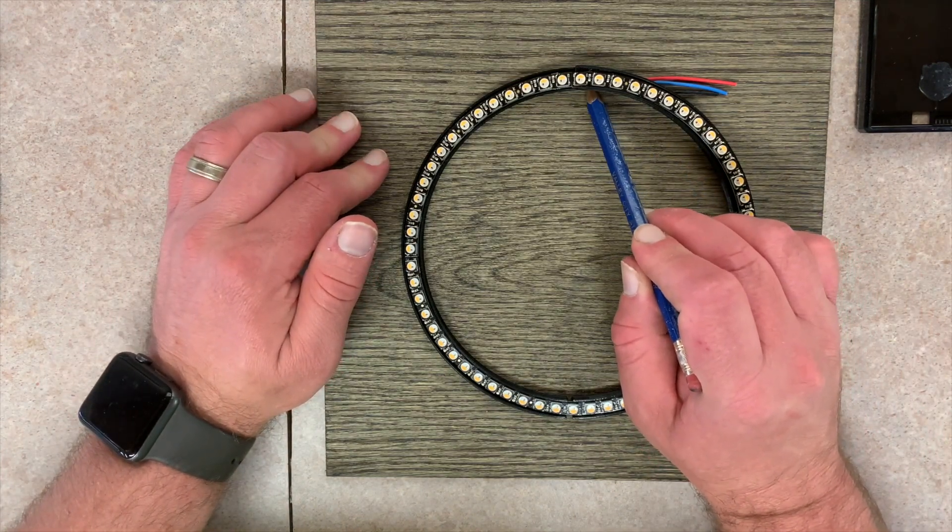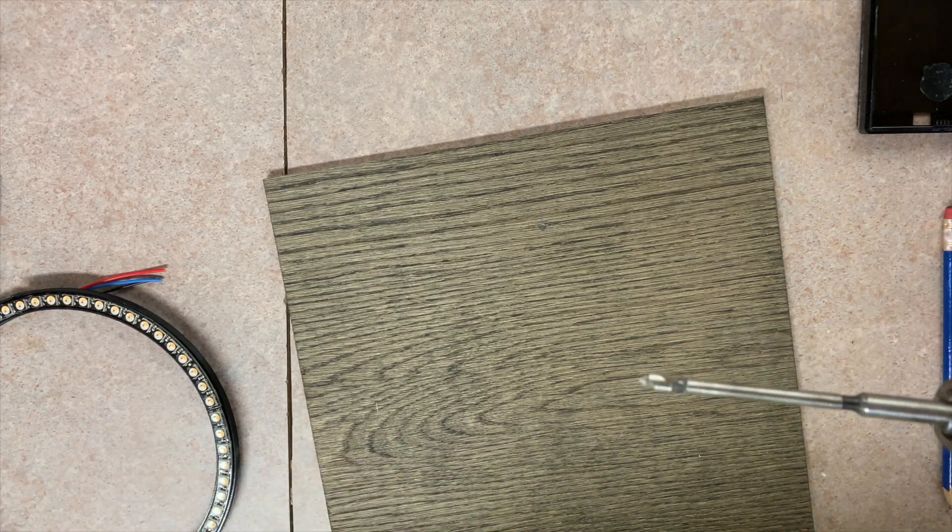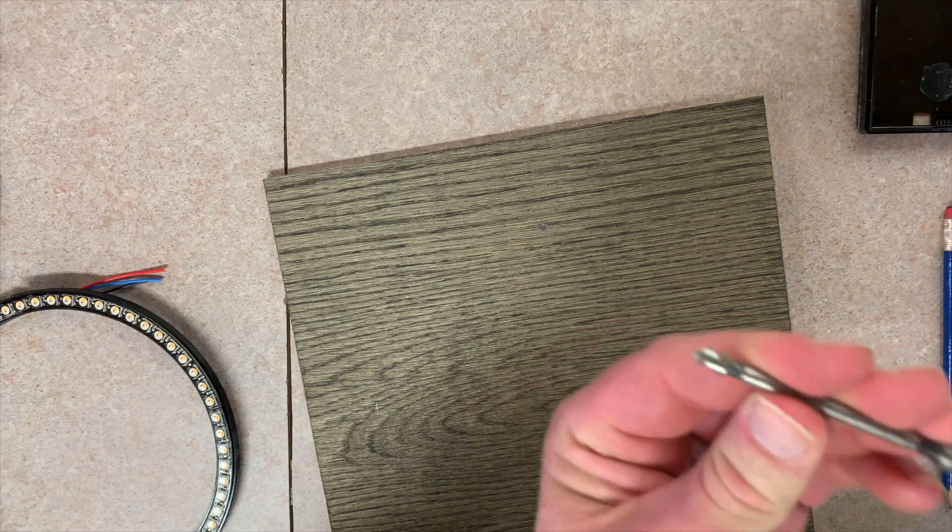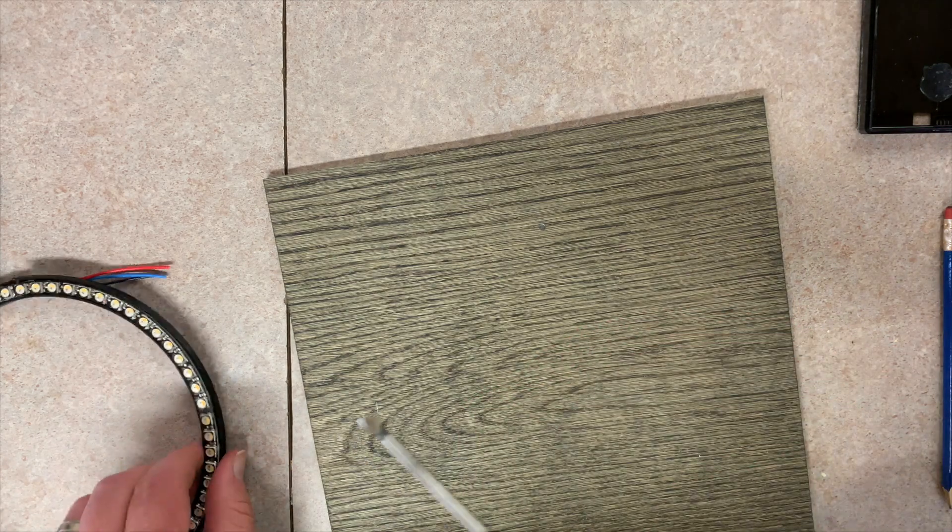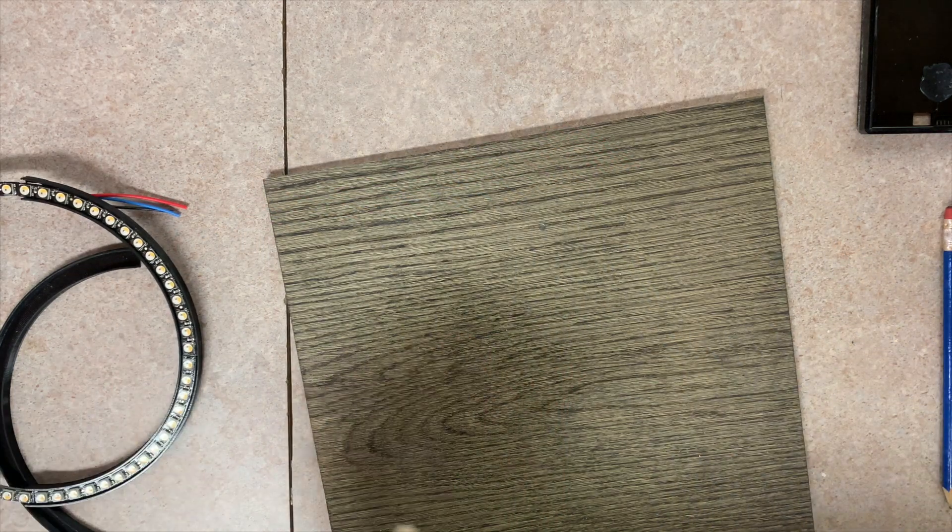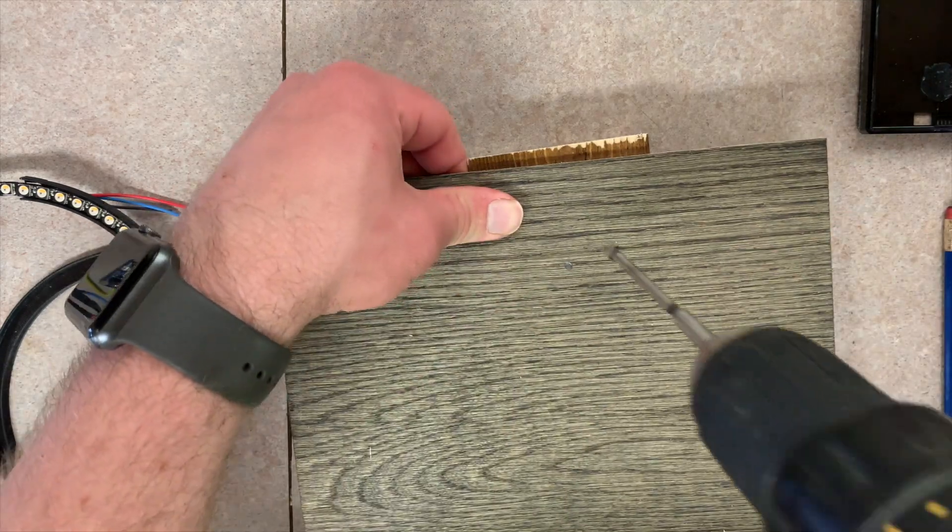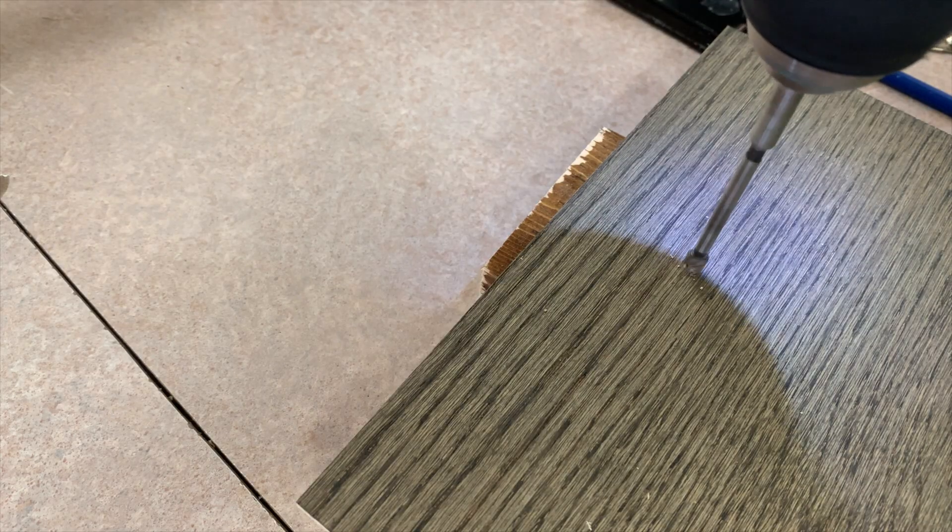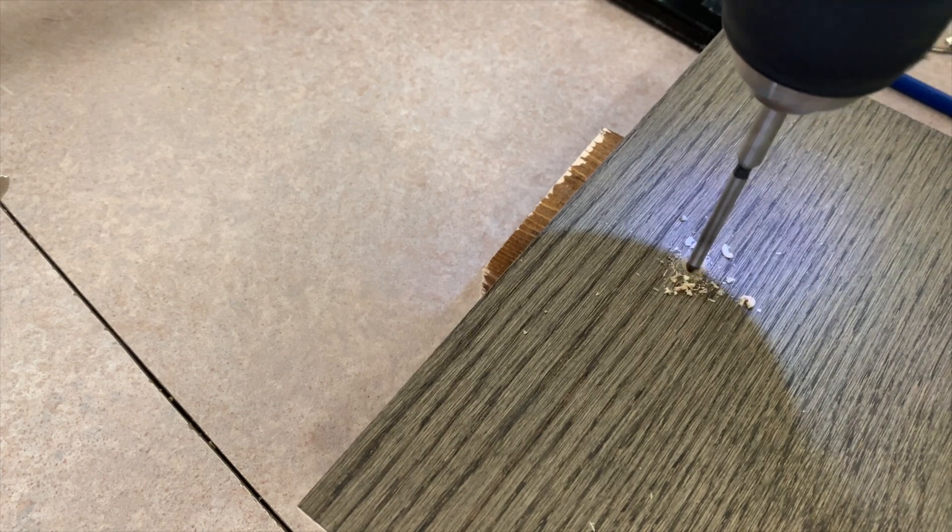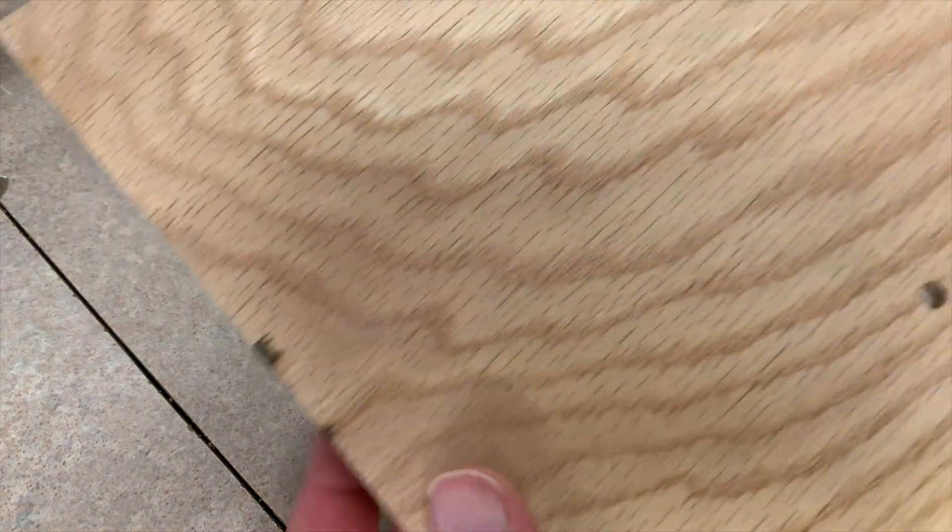I'm going to drill my hole using this little Forstner bit. It's a tiny little guy, should be good enough for this, and it should be able to hide underneath that. Remember to use a backer board so you don't have blow through. Just like that, clean as a whistle.